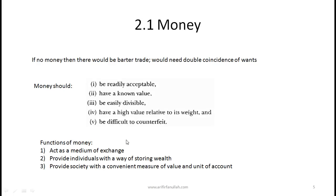Before getting into monetary policy, we need to understand money. To understand money, we need to understand what would happen without it. For most of human history, there was no money, so people used barter trade. The difficulty with barter trade is that it requires a double coincidence of wants — you must find people who want what you have and also have what you want.